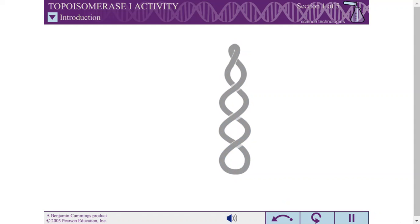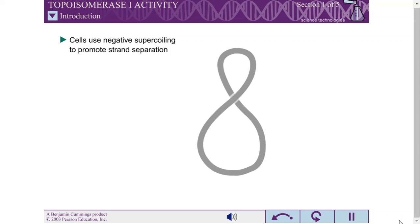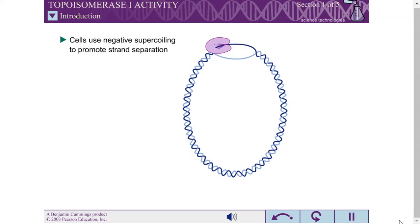The topological state of DNA affects its functioning in the cell. Cells use the torsional strain of negative supercoiling to promote strand separation for processes such as DNA replication and RNA transcription.